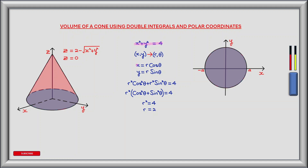To do this we set x equals r cos θ and y equals r sin θ. This gives r² cos²θ plus r² sin²θ equals 4. Factoring out r² we get r² multiplied by the bracket cos²θ plus sin²θ equals 4. Using the trig identity cos²θ plus sin²θ equals 1 we're left with r² equals 4, and taking the positive square root gives r equals 2.